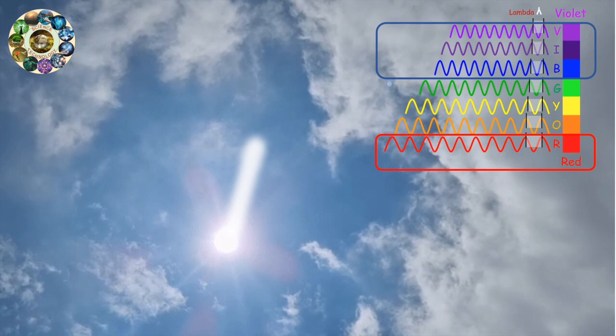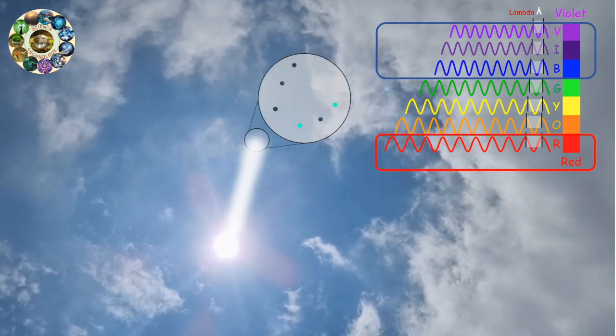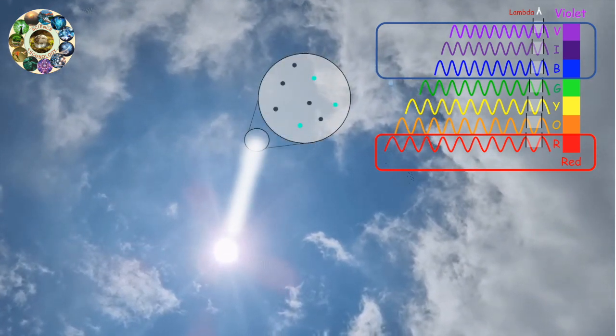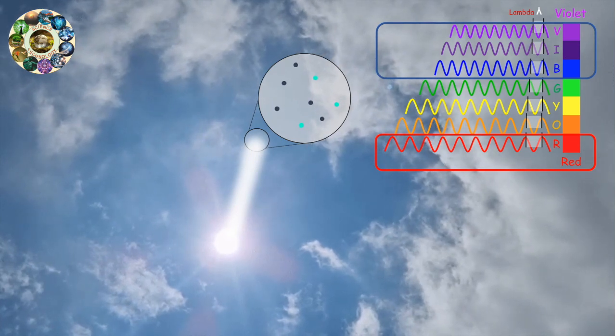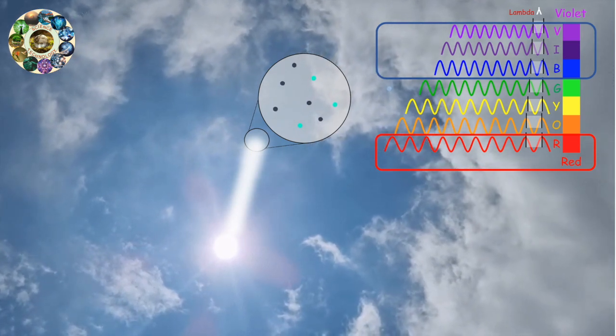When the sun's light reaches the earth's atmosphere, it interacts with the tiny molecules of gas in the air, the tiny or invisible particles that make up our atmosphere.